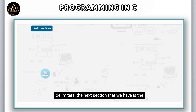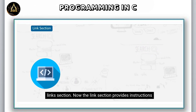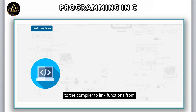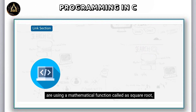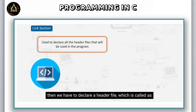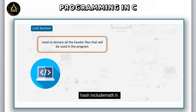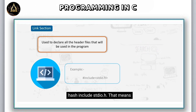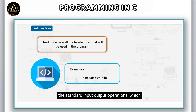The link section provides instructions to the compiler to link functions from the system library. For example, if we are using a mathematical function called square root, then we have to declare a header file called #include math.h. Here we have declared a header file #include stdio.h, meaning the program is capable of using all the standard input/output operations included in this particular header file.